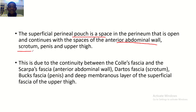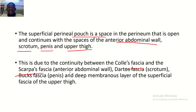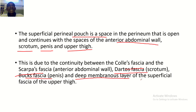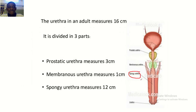This is due to the continuity between Colles' fascia and Scarpa's fascia — the fascia of the anterior abdominal wall — and the Dartos fascia, Buck's fascia, and the deep membranous layer of the superficial fascia of the upper thigh. This is why urine flows into all these spaces in extravasation of urine following rupture of the spongy urethra.